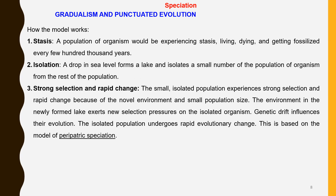How does the punctuated evolution model work? The first stage is the stasis stage. Here, a population of organisms would experience stasis, living, dying and getting fossilized every few hundred thousand years. Very little observable evolutionary change happens during this period of time.